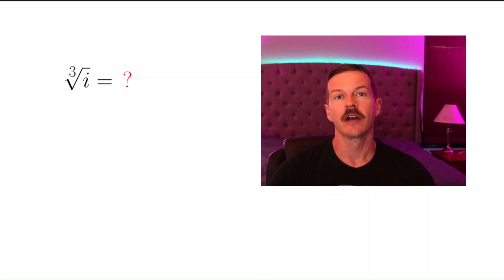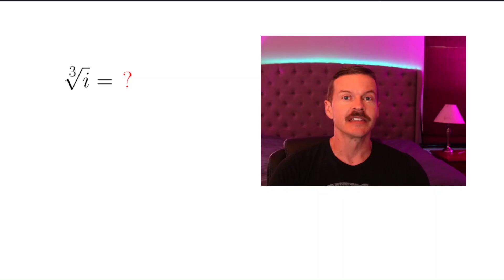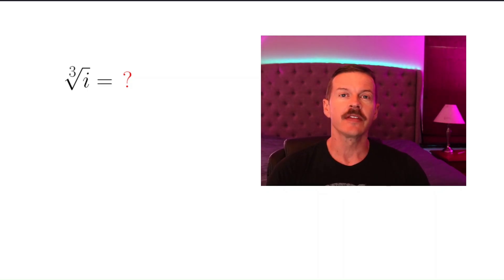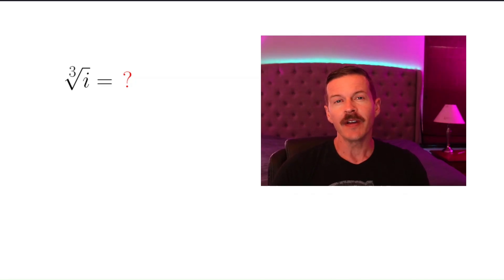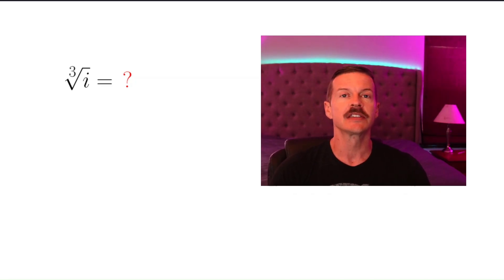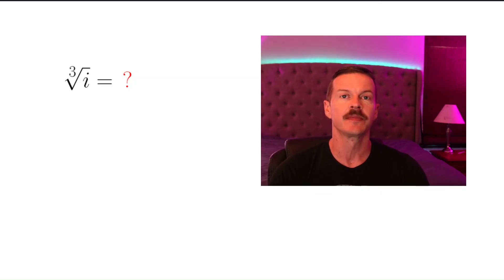How do we find the cube root of i, or really the cube root of any complex number for that matter? It turns out that every complex number other than zero has three different cube roots. And finding those cube roots is actually not too hard as long as you understand the geometry of complex multiplication.